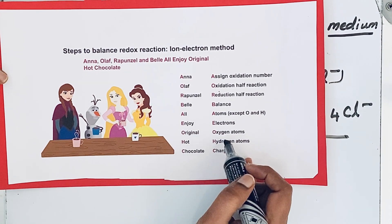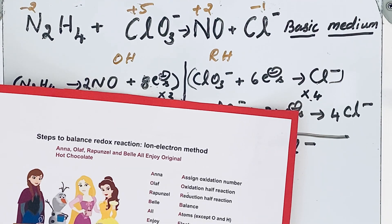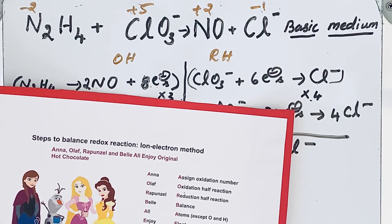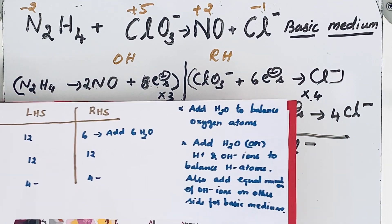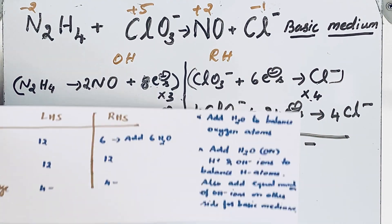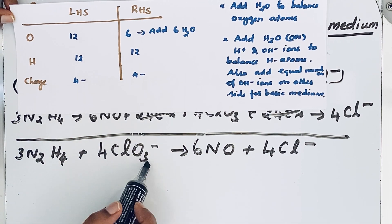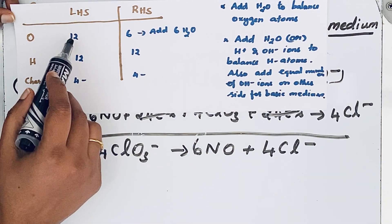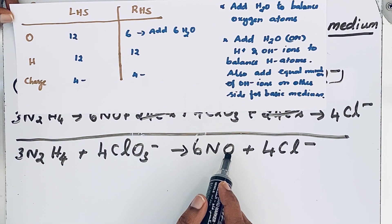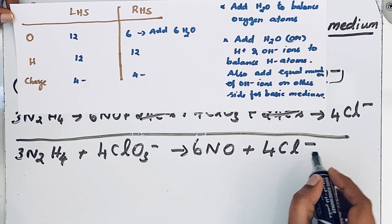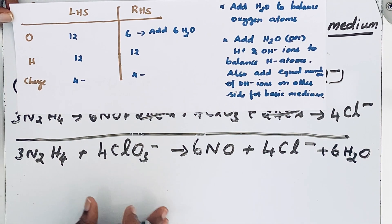Now come to the next step: balance oxygen atoms, then hydrogen atoms. To balance oxygen atoms we add water molecules. On the left hand side we have 4×3 = 12 oxygen atoms. On the right hand side we have only 6 oxygen atoms. So we add 6 H2O to the right hand side. Oxygen atom balancing is now complete.